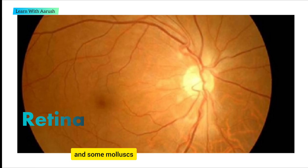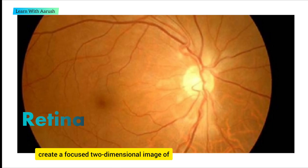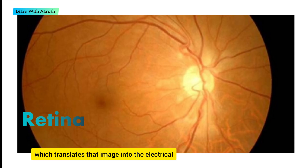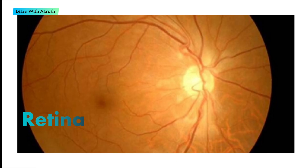And some molluscs. The optics of the eye create a focused two-dimensional image of the visual world on the retina, which translates that image into electrical neural impulses to the brain to create visual perceptions.